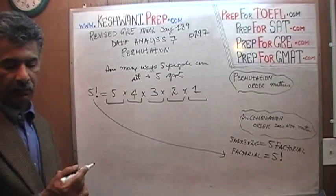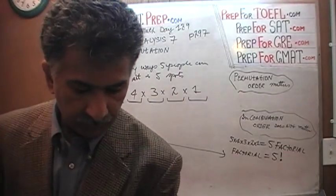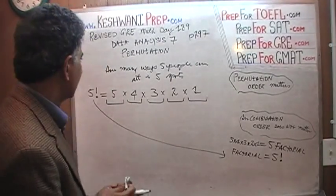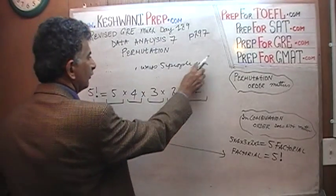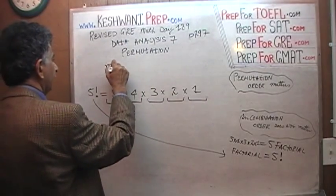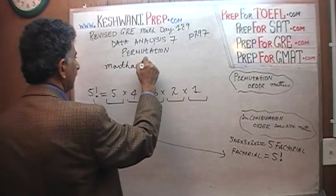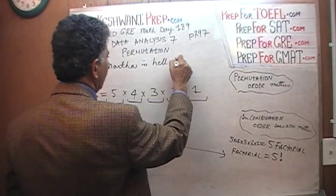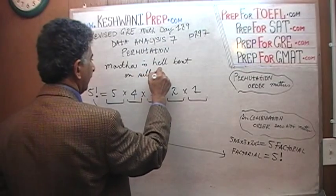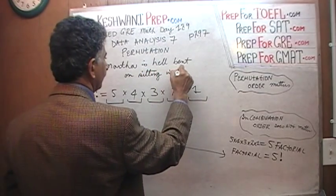Now, this is situations where there are no restrictions. Today, we are doing a problem where this lady, Martha, this girl Martha, is going to a movie with a group of her friends.